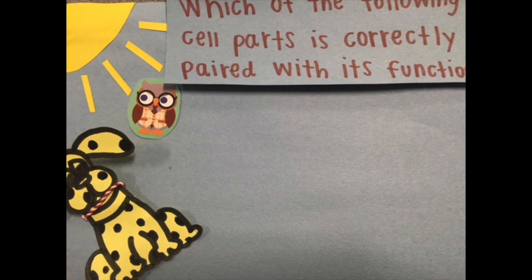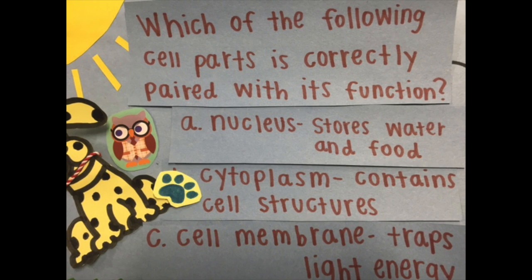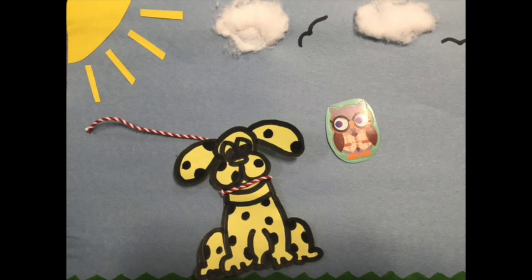Which of the following cell parts is correctly paired with its function? The cytoplasm. Thigh spores.